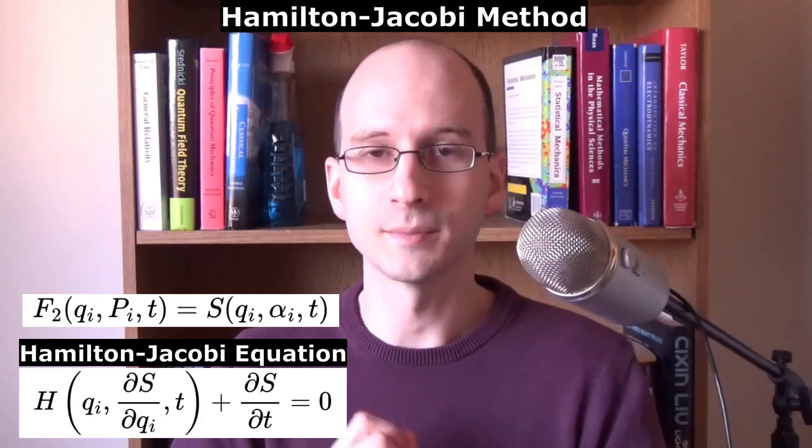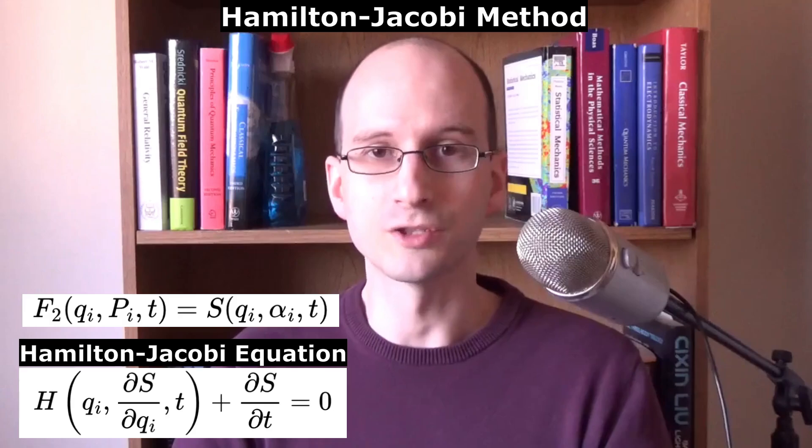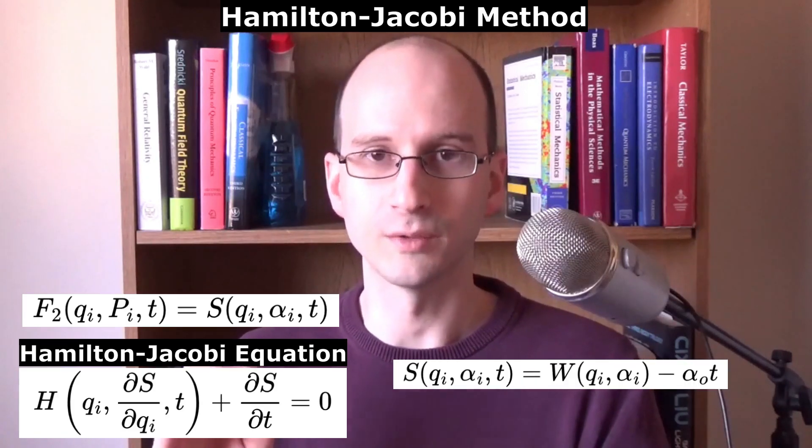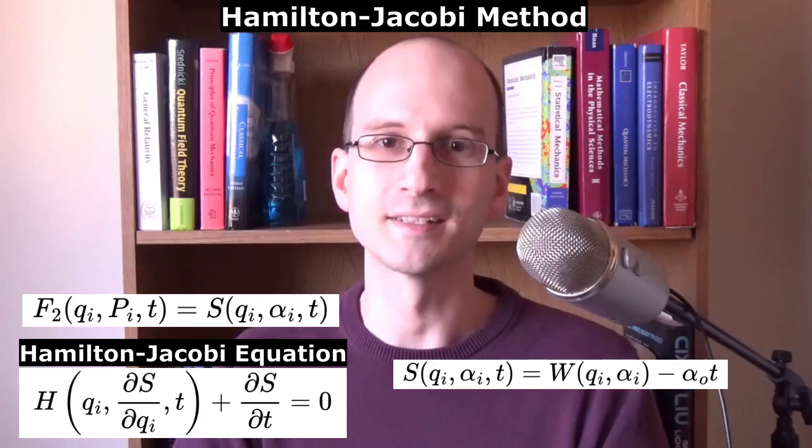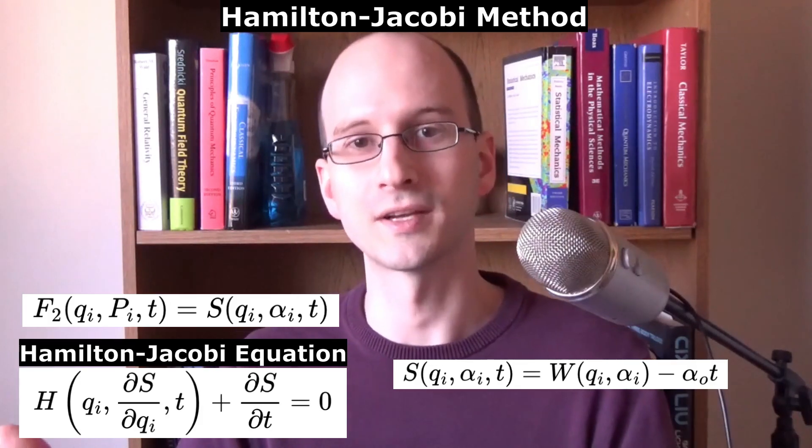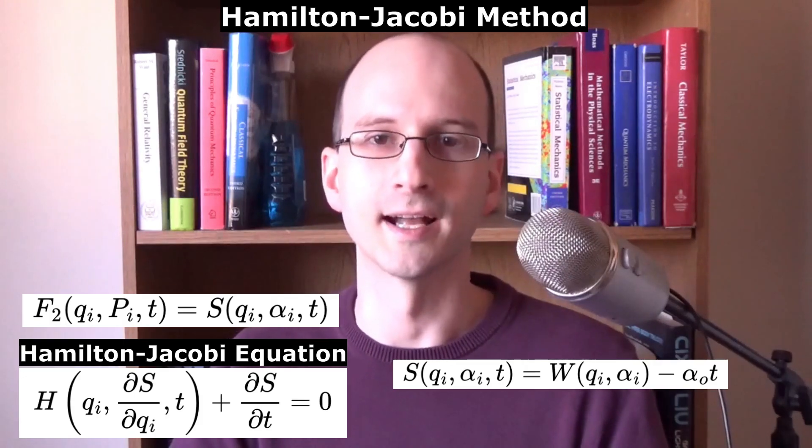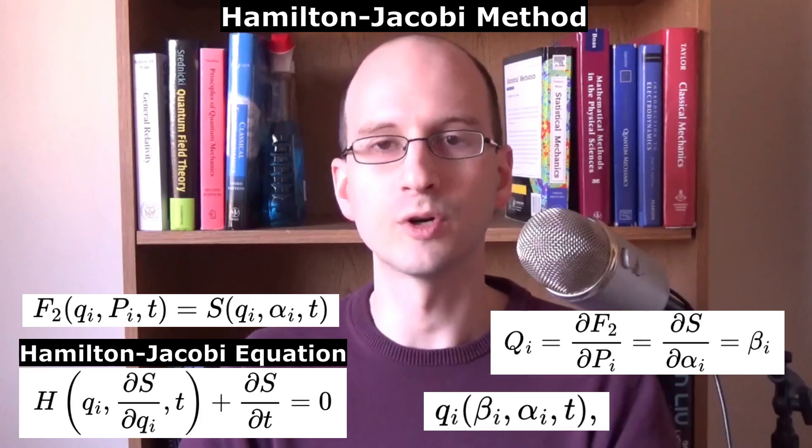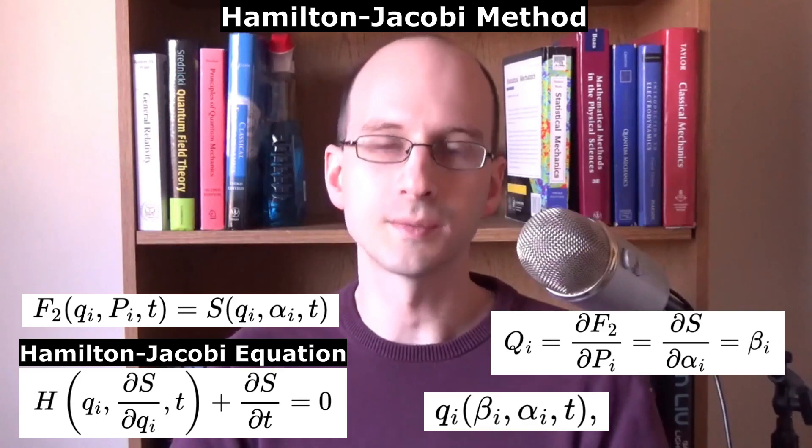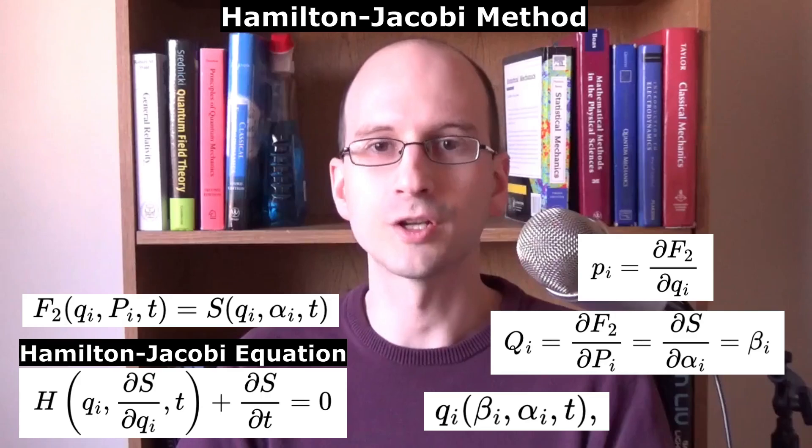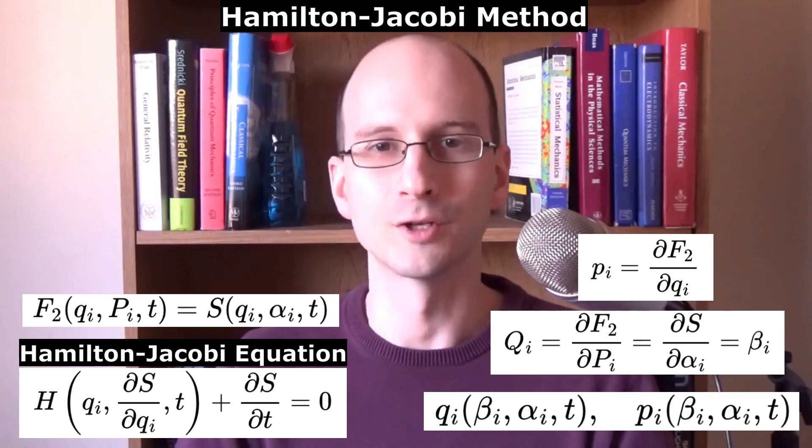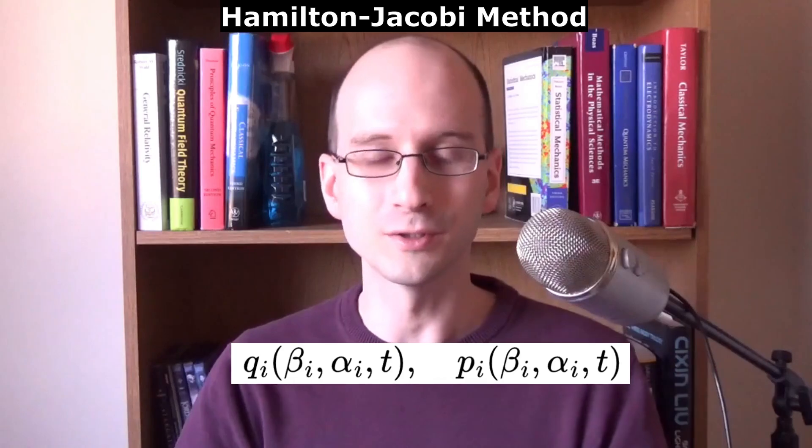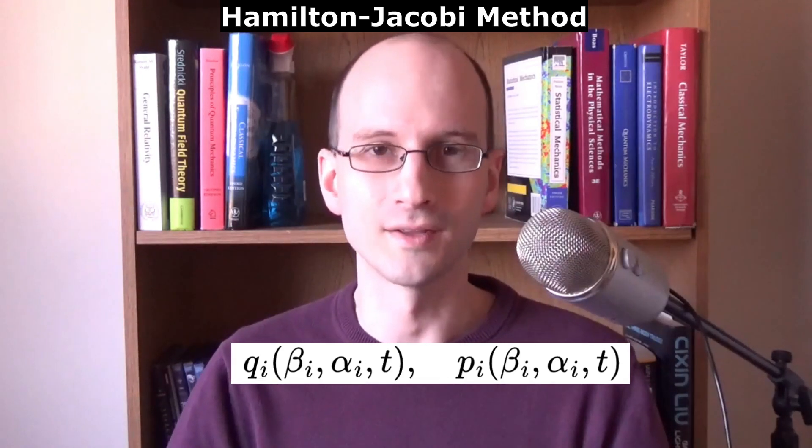By the way, if the Hamiltonian does not depend explicitly on time, we can simplify this generating function s of q alpha and t as w of q and alpha, not depending on time, minus a constant times time. W is called Hamilton's characteristic function, or the abbreviated action. The transformation equation tells us the constant q's in terms of s. We invert it to find the variable coordinate in terms of the constants and time, and substitute the result into one of the transformation equations to find the variable momenta in terms of the constants and time. These variable coordinates and momenta as functions of the constant and time are the solution to the physical problem. They tell us how the system changes over time.